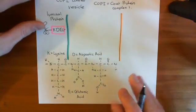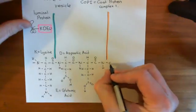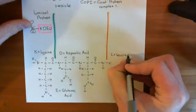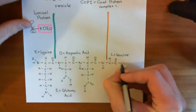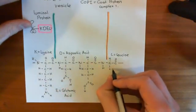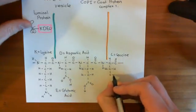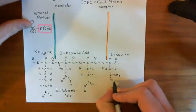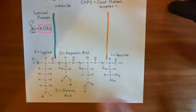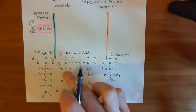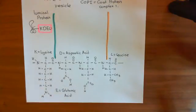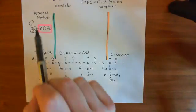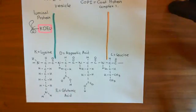Our final amino acid in this KDEL sequence is L, which stands for leucine. You have the hydrogen off the alpha carbon and the carboxyl group going to the next amino acid. The R group of leucine has a methylene group, and then the next carbon has two methyl groups coming off it plus a single hydrogen. So that's the structure of leucine. This overall is our KDEL sequence: K, D, E, L. If your protein contains this sequence of amino acids, it will be recognised as a protein that needs to move back from the Golgi to the ER. This is for luminal proteins — proteins not in the membrane, but within the lumen of the cis-Golgi.